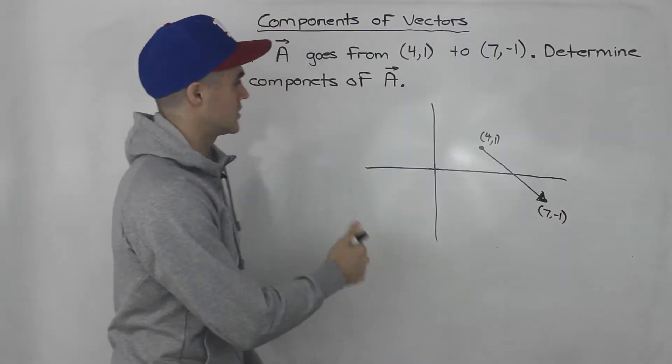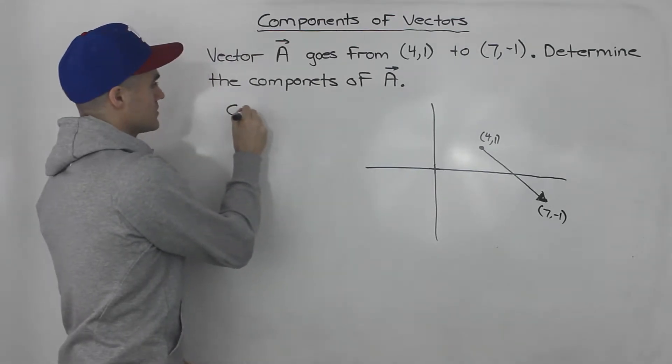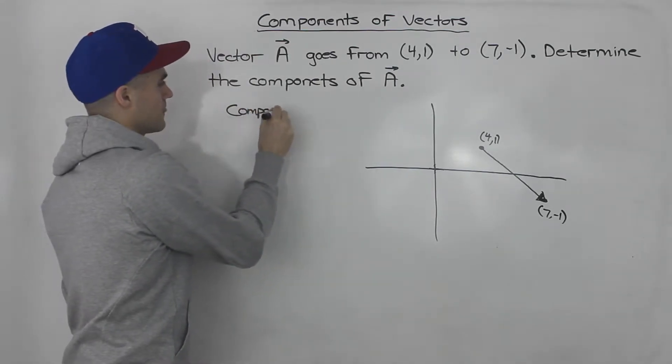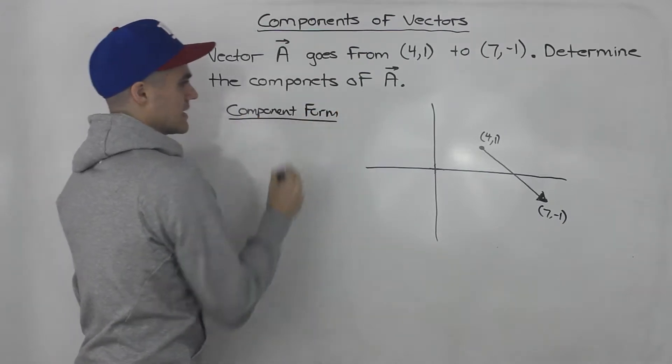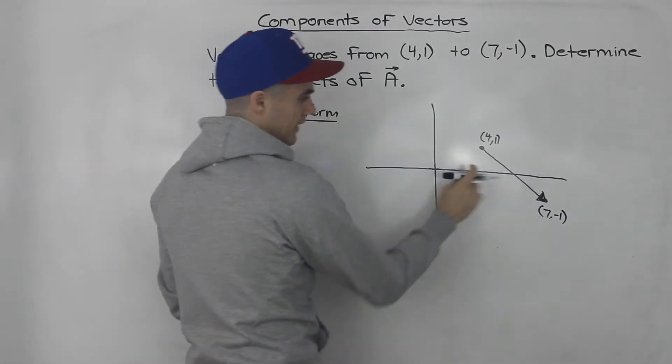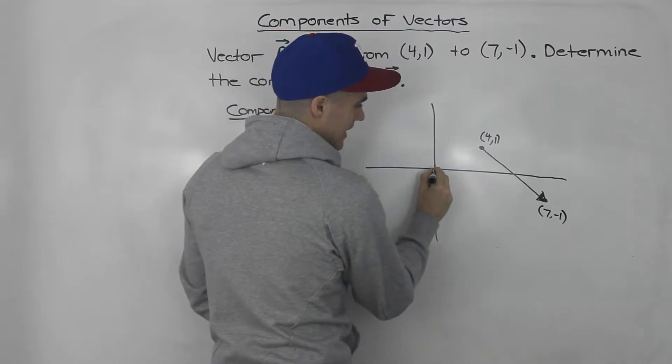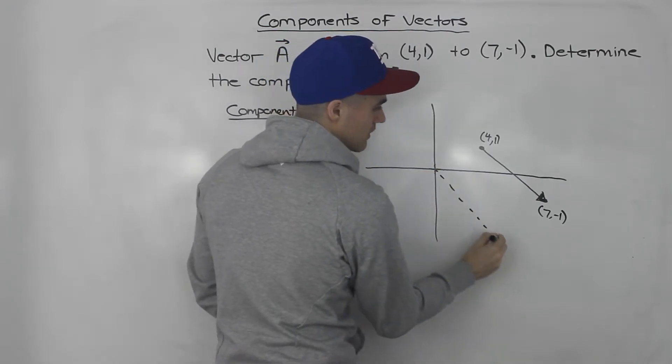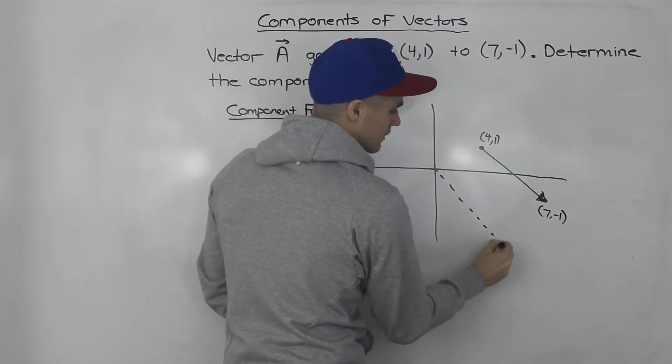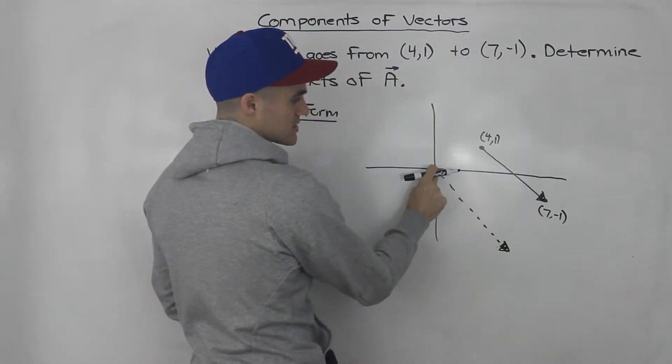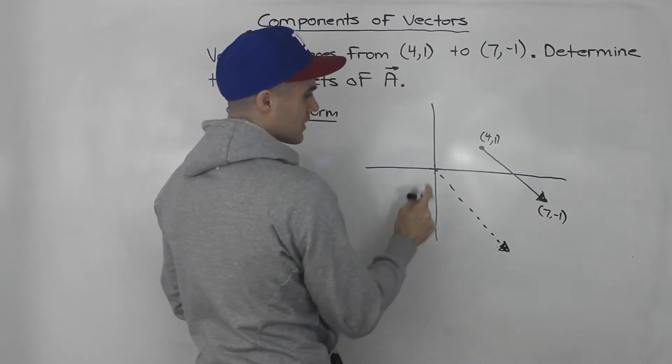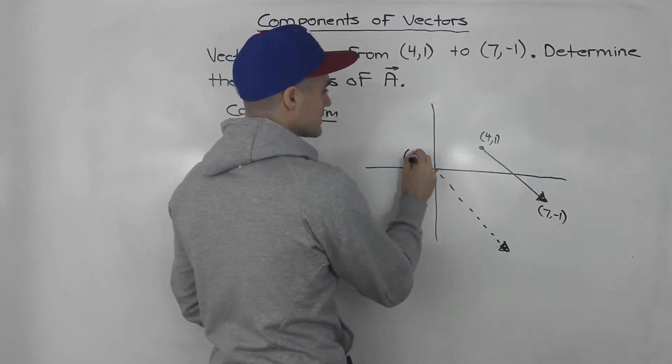Now if we want to take this vector and put it into component form, what that means is we have to draw an equivalent vector but where the tail starts at the origin. It's like we're taking this vector and shifting it so the tail would start at the origin at (0,0).